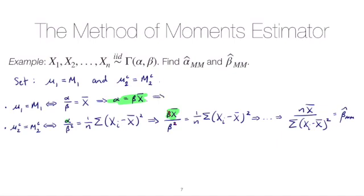And then that implies that your method of moments estimator for alpha should be the method of moments estimator for beta times x bar. And if you wanted to plug that in that would be n times x bar squared over the sum of xi minus x bar squared.